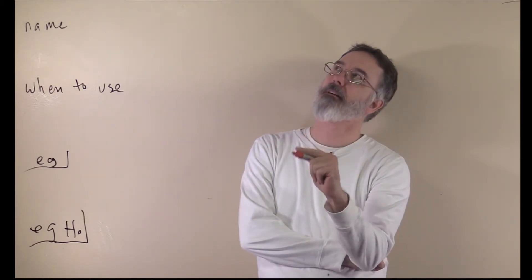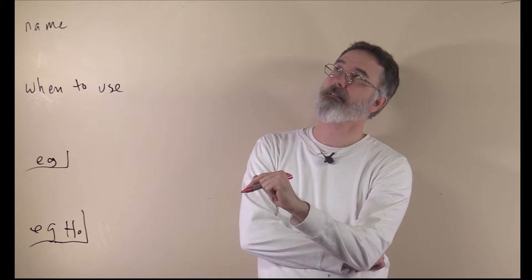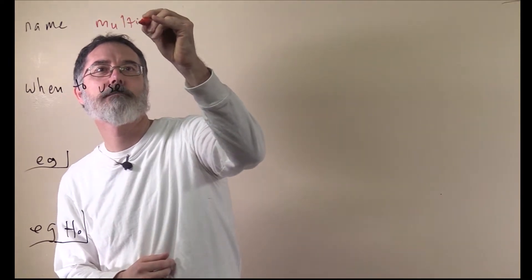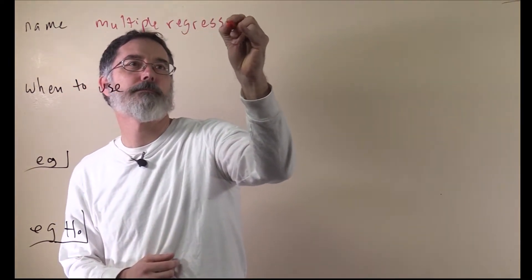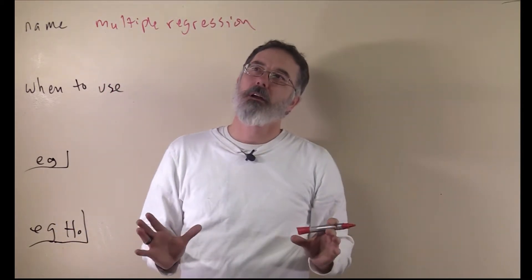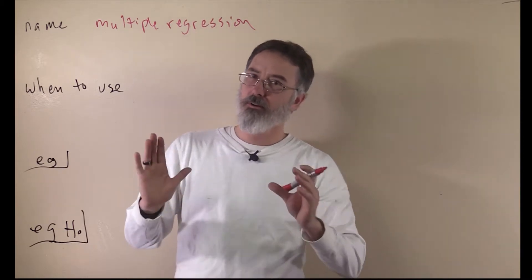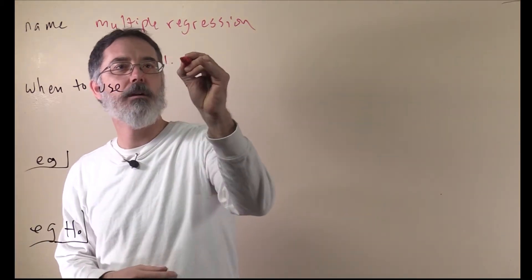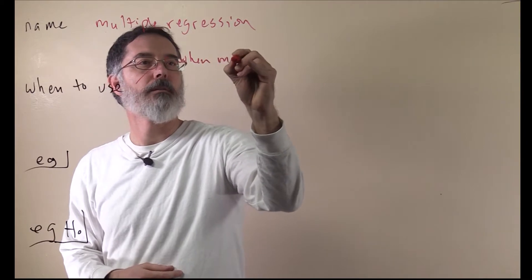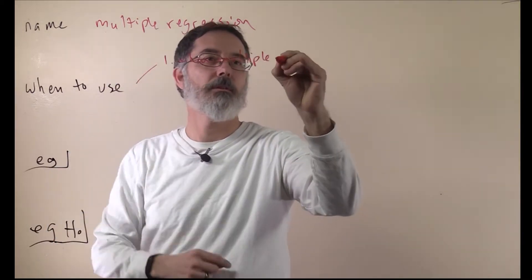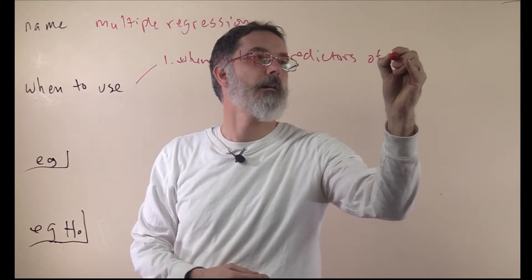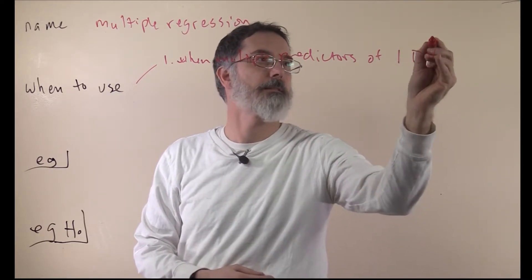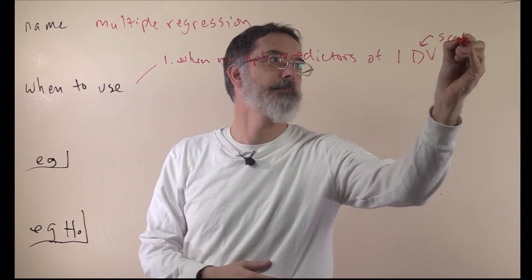We are going to talk about the very last parametric statistical test for this whole class. It is called multiple regression. It is like simple regression, except with multiple regression, you have more than one predictor variable predicting one outcome variable. It is always one outcome variable for a multiple regression, and this dependent variable should be scale — interval or ratio.